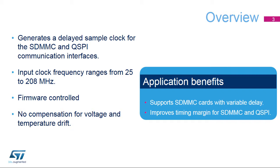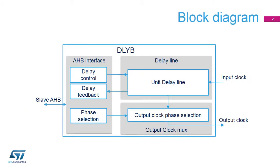In the STM32H7, a delay block is available with the SDMMC1, SDMMC2, and the Quad SPI modules. Located on the AHB bus, the Delay Block Module consists of an AHB interface containing the delay line control, feedback information, and output clock selection registers with the delay line and output clock multiplexer parameter values.